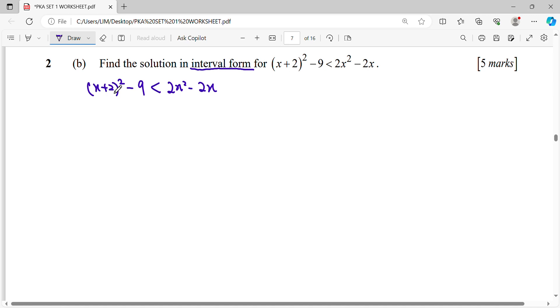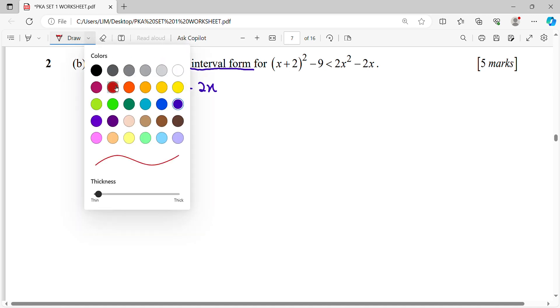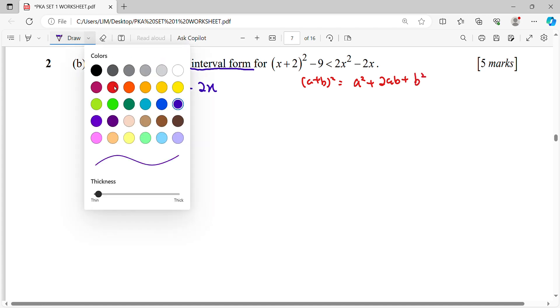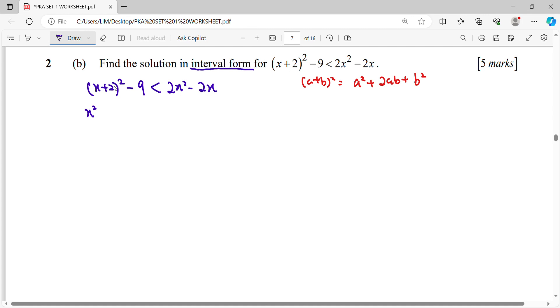So expand this. How to expand this? We just revise when you have (a + b)². It will be a² + 2ab + b². So maksudnya apa? Maksudnya front square, 2 times front and back. So 2 times 2 is 4, 4 times x. And back square is 4.